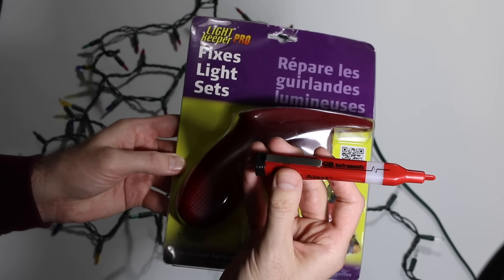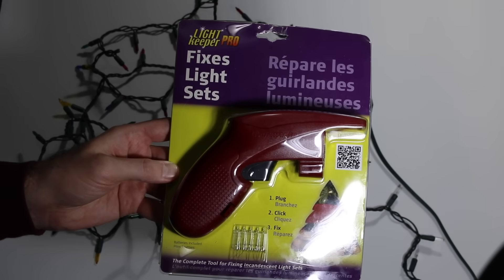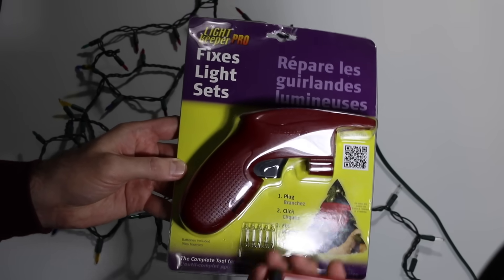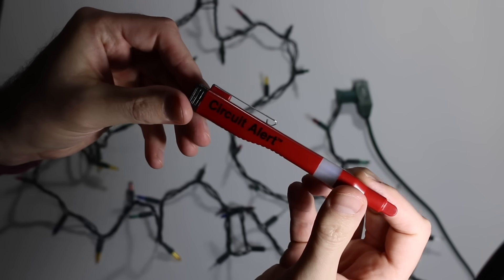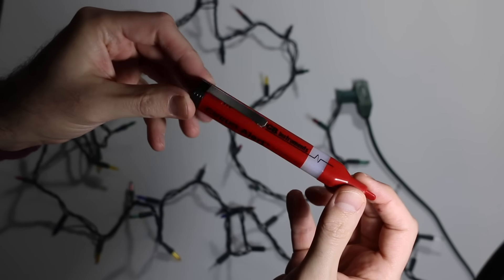I normally use one of these non-contact voltage testers, but I also just bought this Lightkeeper Pro on Amazon. I'll put links to these below. So I'm going to try this as well. These voltage testers can be bought for a few dollars, or they can get expensive, $20 or $30.